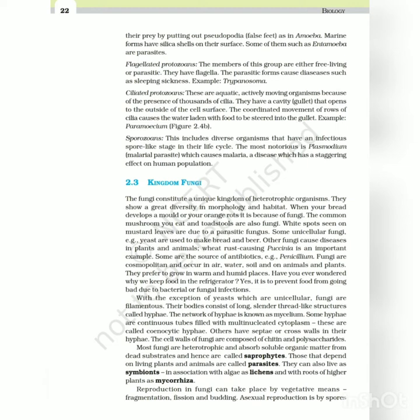Flagellated protozoans - the members of this group are either free-living or parasitic. They have flagella. The parasitic forms cause diseases such as sleeping sickness. Example: Trypanosoma. Ciliated protozoans - these are aquatic, actively moving organisms because of the presence of thousands of cilia. They have a cavity called gullet that opens to the outside of the cell surface. The coordinated movement of rows of cilia causes the water laden with food to be steered into the gullet. Example: Paramecium, Figure 2.4B.